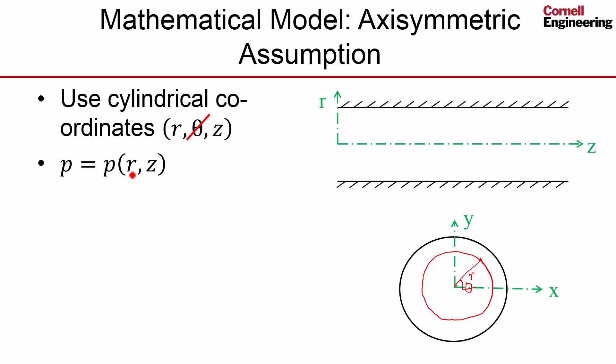For instance, pressure is just going to be a function of the radial coordinate and the axial coordinate, p = p(r, z). And the velocity, instead of decomposing it into the usual x and y components, we're going to decompose it into a radial component and an axial component. And then there's also a circumferential component. We'll say that that's also zero.